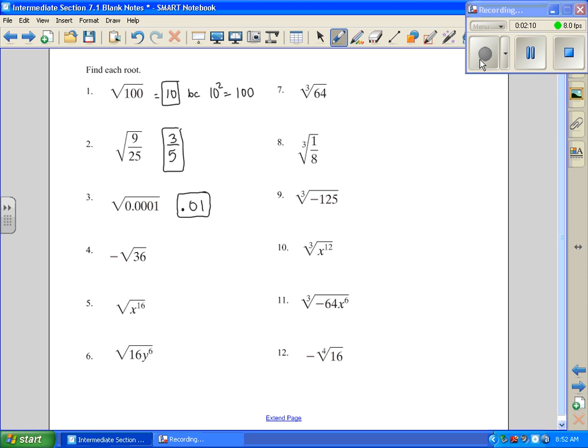And number four, we want to look at it. What squared, first of all, I'm going to ignore the negative sign out front. What squared gives us 36? Well, we know 6 times 6 is 36, so that's 6. And then the negative is just brought down in front of it. So our answer is negative 6.